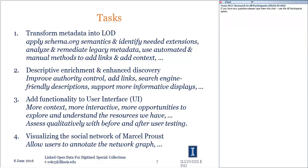We're also expecting this linked open data version of the metadata to support more informative displays for the user, better connected to library and non-library resources, and we're beginning to think about what those user interface displays will look like. Our last project task involves taking that 7,000-name database and thinking about how to present it graphically as a social network to users, allowing users to annotate that network. For example, Marcel Proust appears in connection with many individuals who had opinions on the Dreyfus affair, but we don't know from existing metadata which side those individuals were on. We're hoping to use annotation to improve our understanding of the relationships — whether connections are colleague, friend, familial, or adversarial.